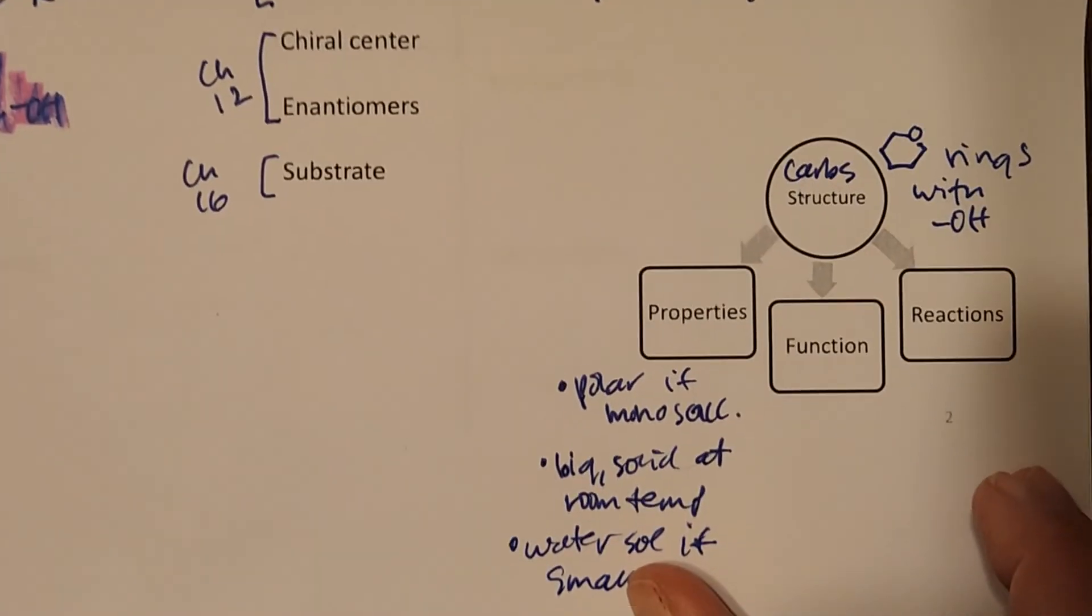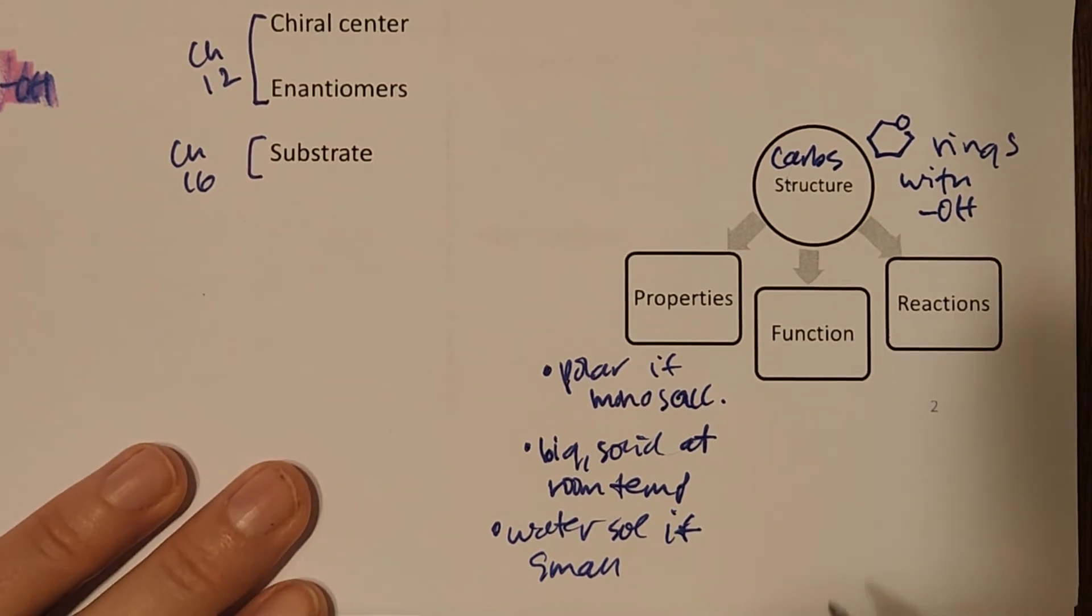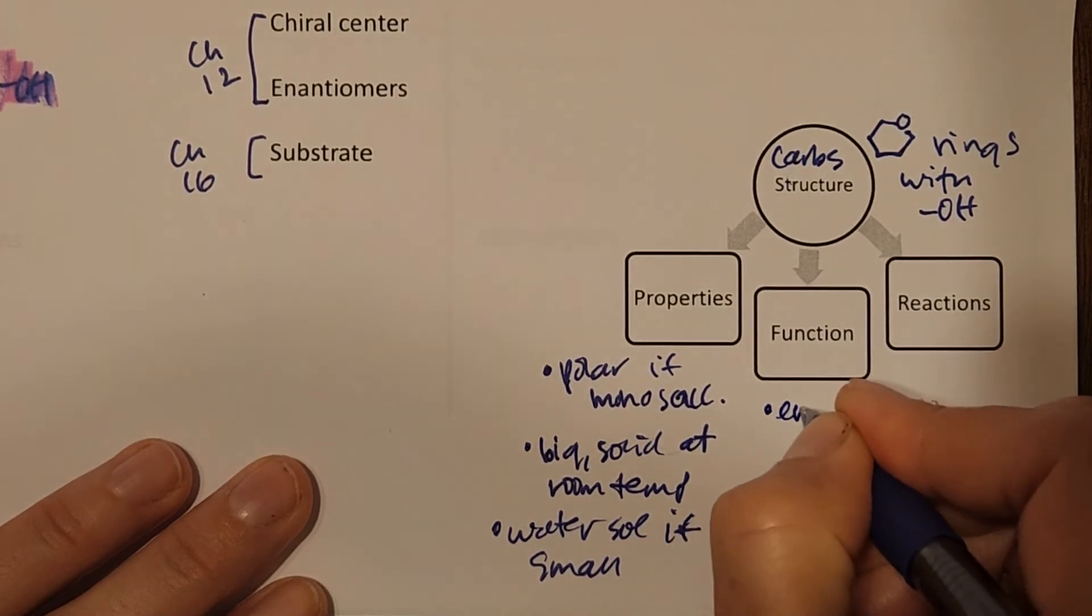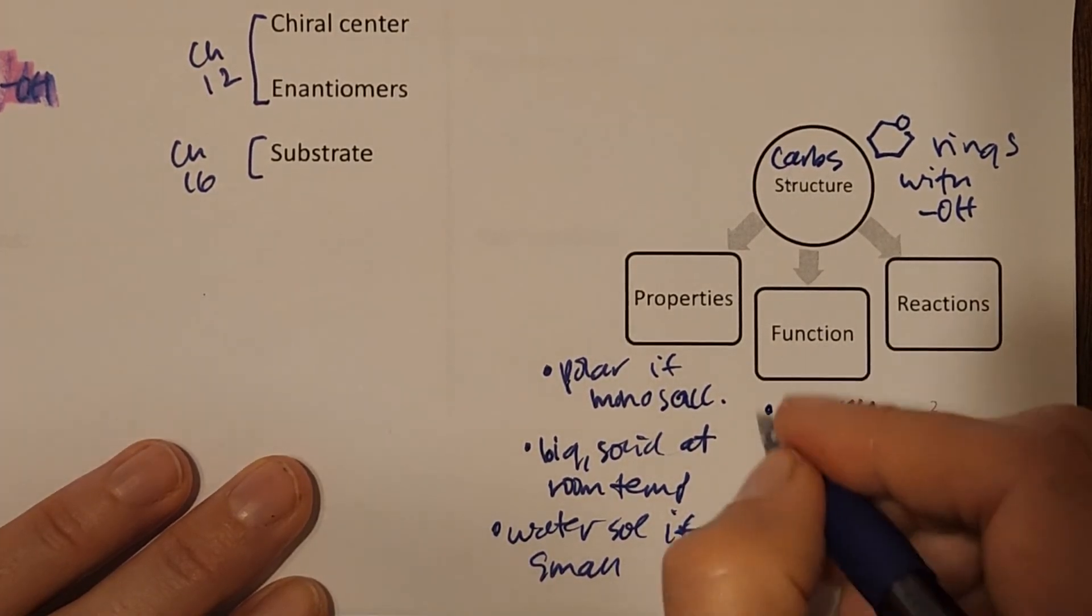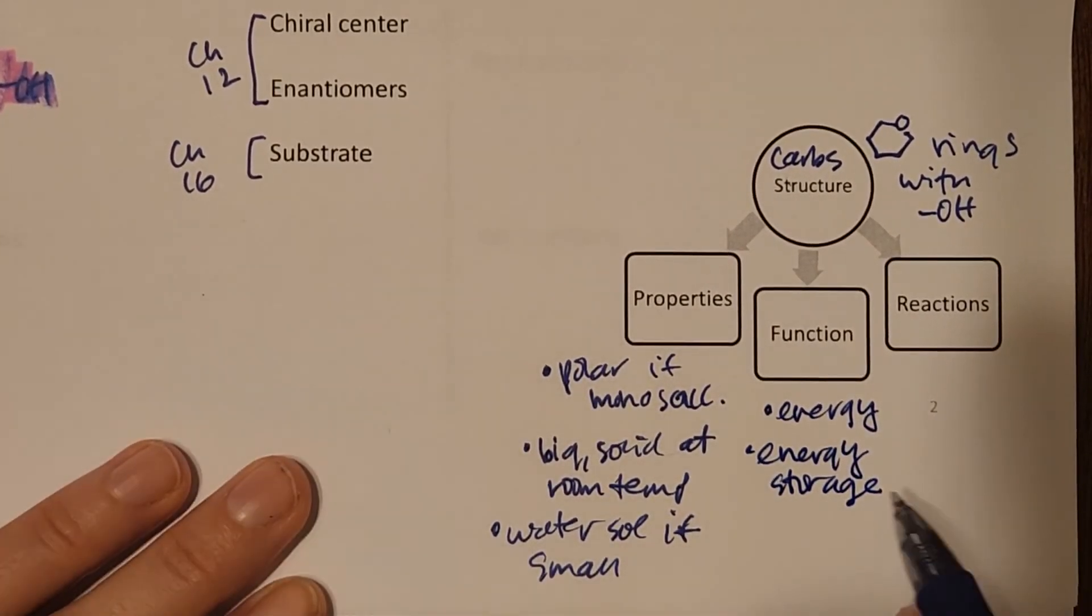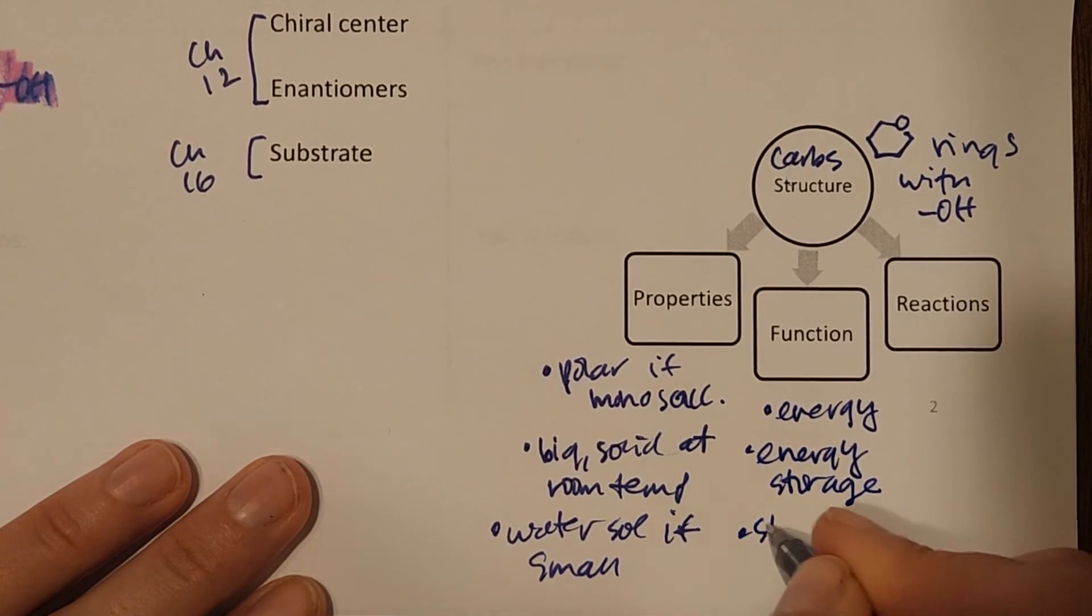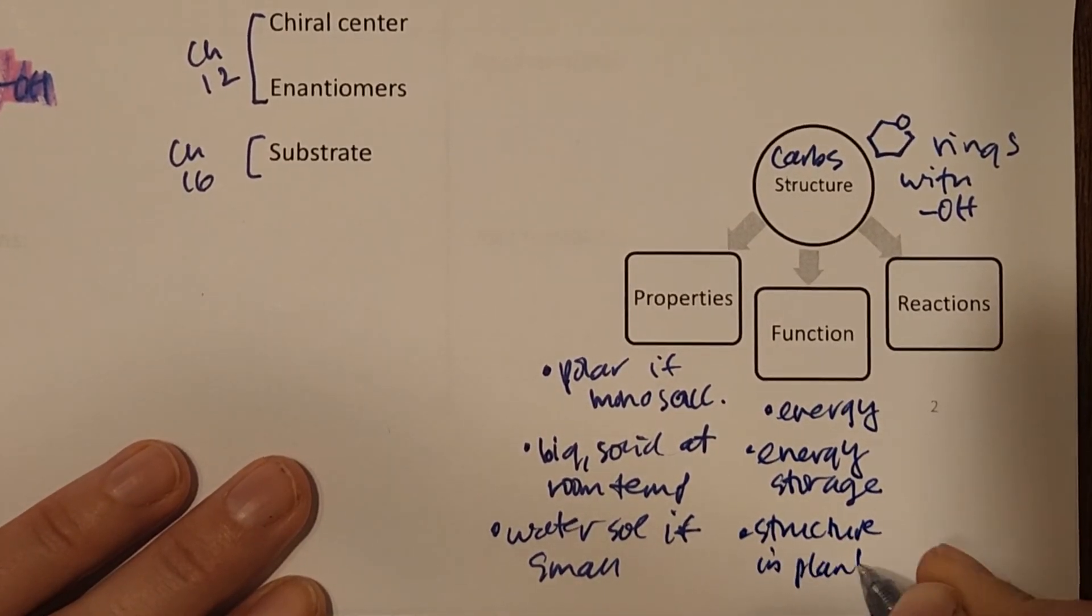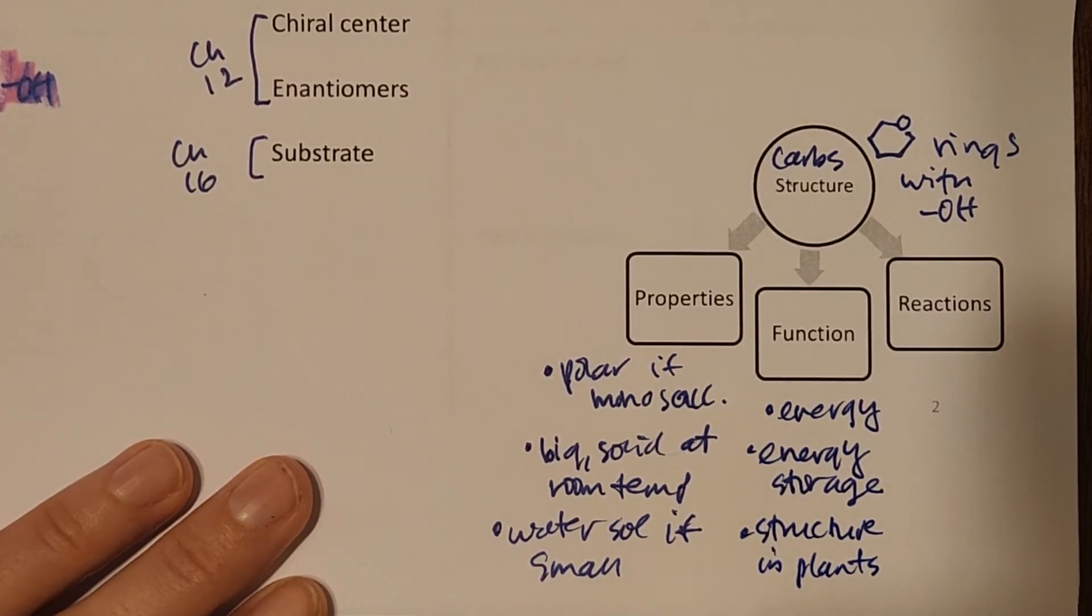So see how those are some properties of my carbohydrates. As far as functions, this is what do we use them for? We definitely use our carbs for energy, just to metabolize them right away. We also have some energy storage, that would be like the glycogen. And then if you're looking in a plant, then you have things like cellulose or fiber that provides structure in plants.